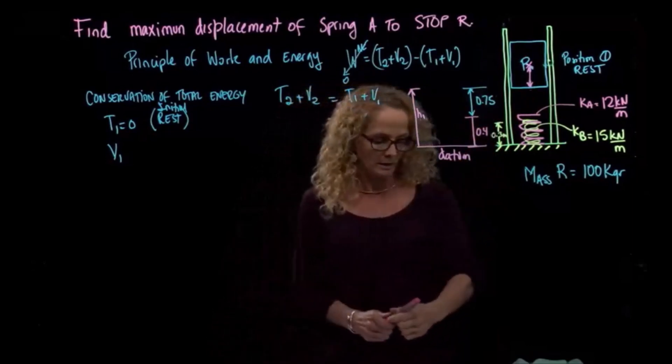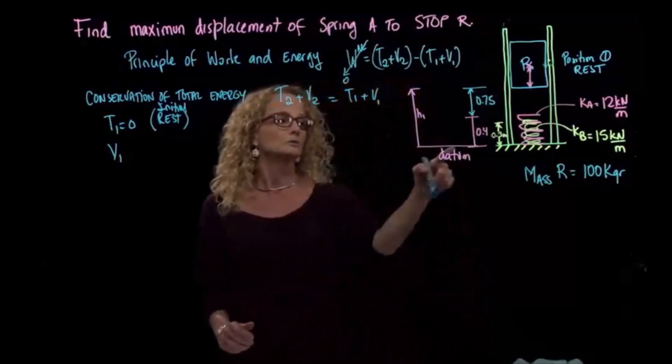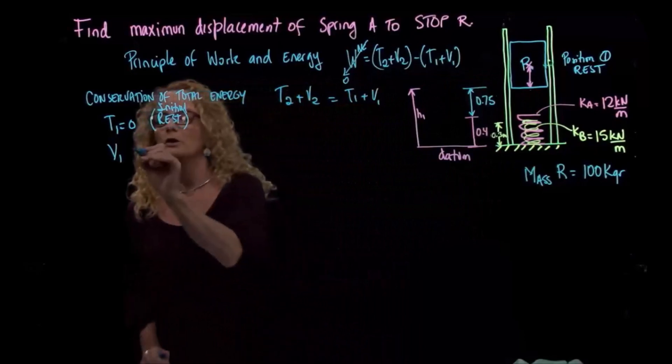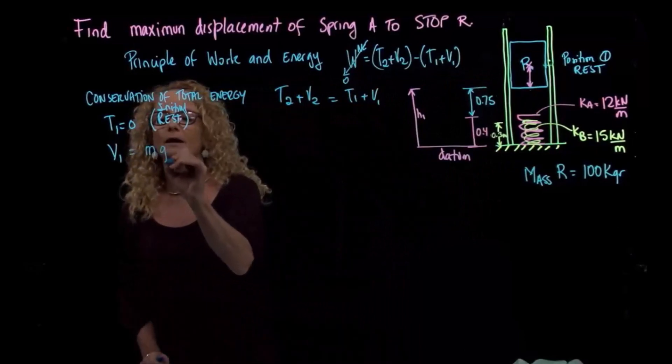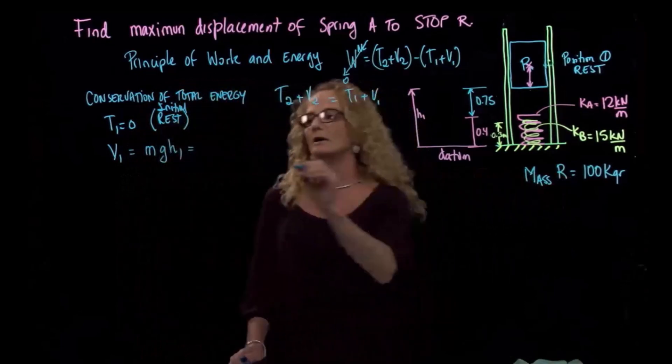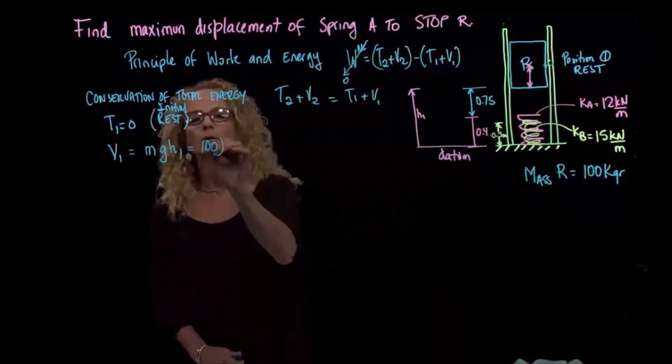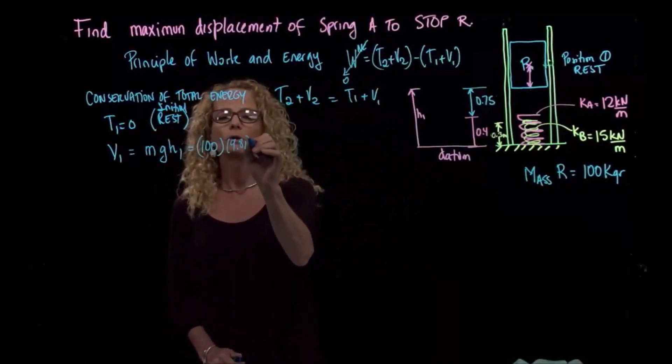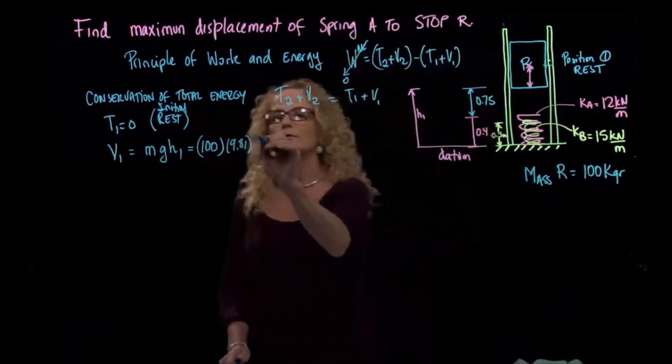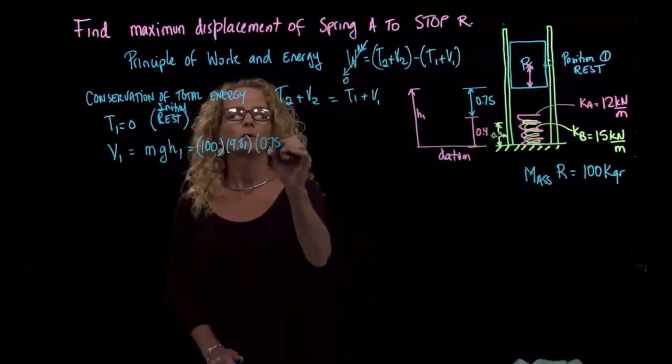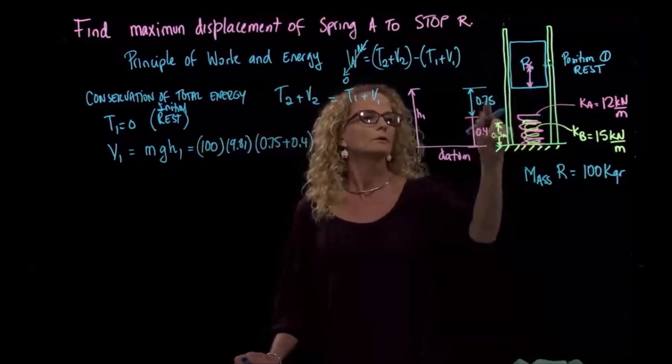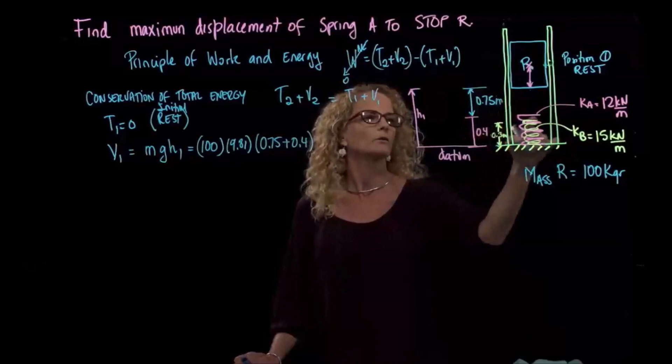We continue with the potential energies. Since we put the datum down here, we have positive potential energy, which will be equal to mass, gravity, and height one. The mass is given, which is 100 kilograms. The gravity is known. And we have H1. H1 we will take into consideration, which is 0.75 meters plus 0.4, because they are saying that our block is 0.7 meters above our first spring.